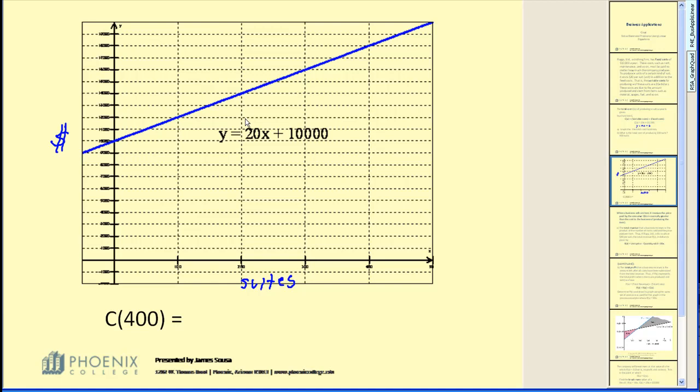The question was, how much does it cost to produce 100 suits? By looking at the graph, you can just go to 100, up to the function, over to the Y-axis, and see that it's $12,000. 400 suits, over here on the far right, go up to the function, and you can see that it's $18,000.